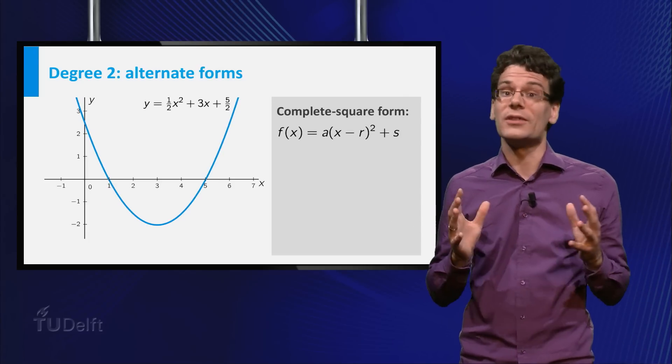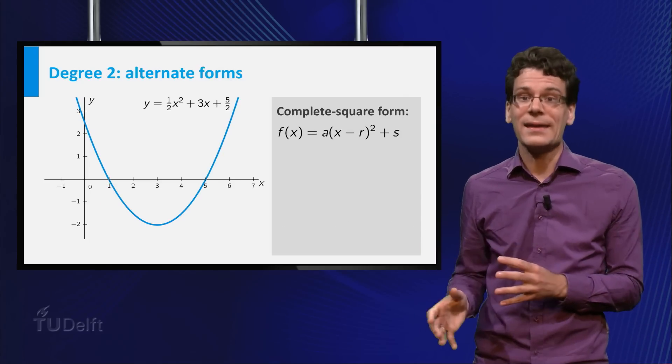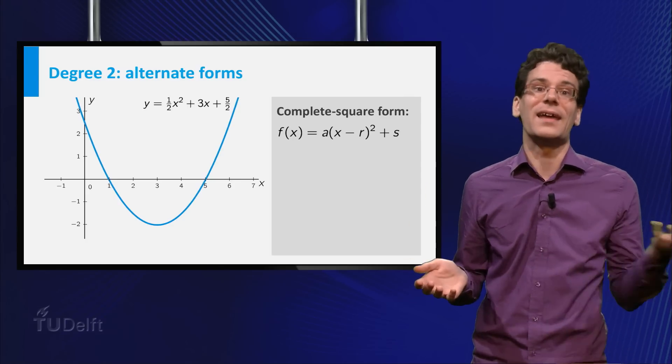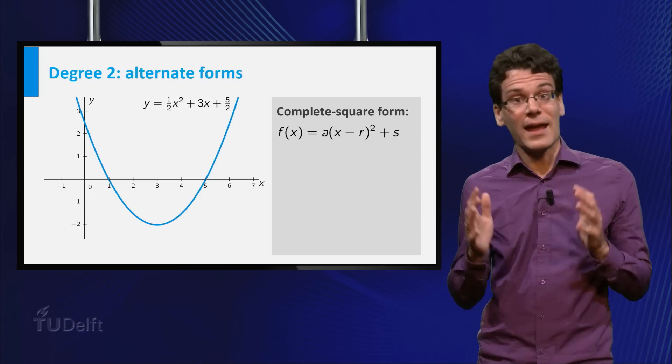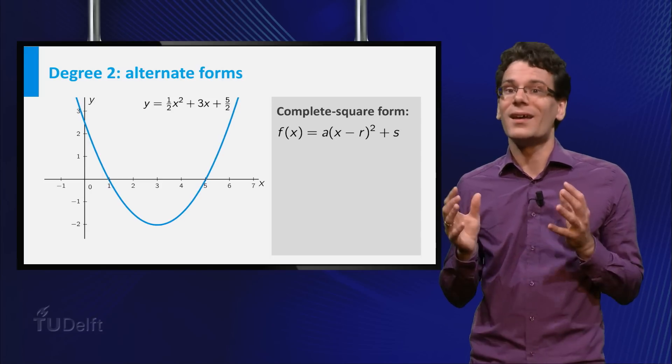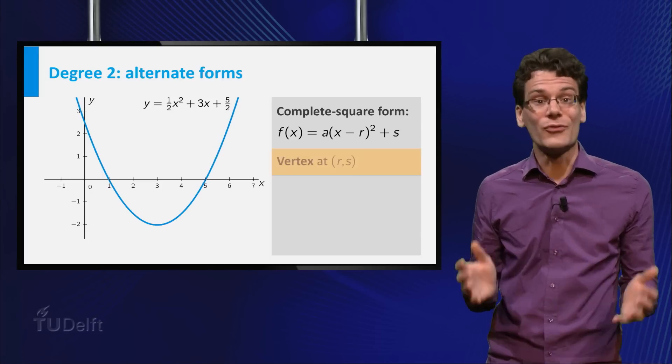Another common form is the complete square form, a times (x minus r) squared plus s, where a, r and s are numbers. Here a plays the same role as before. But also r and s have a clear interpretation, they are the x and y coordinates of the vertex.